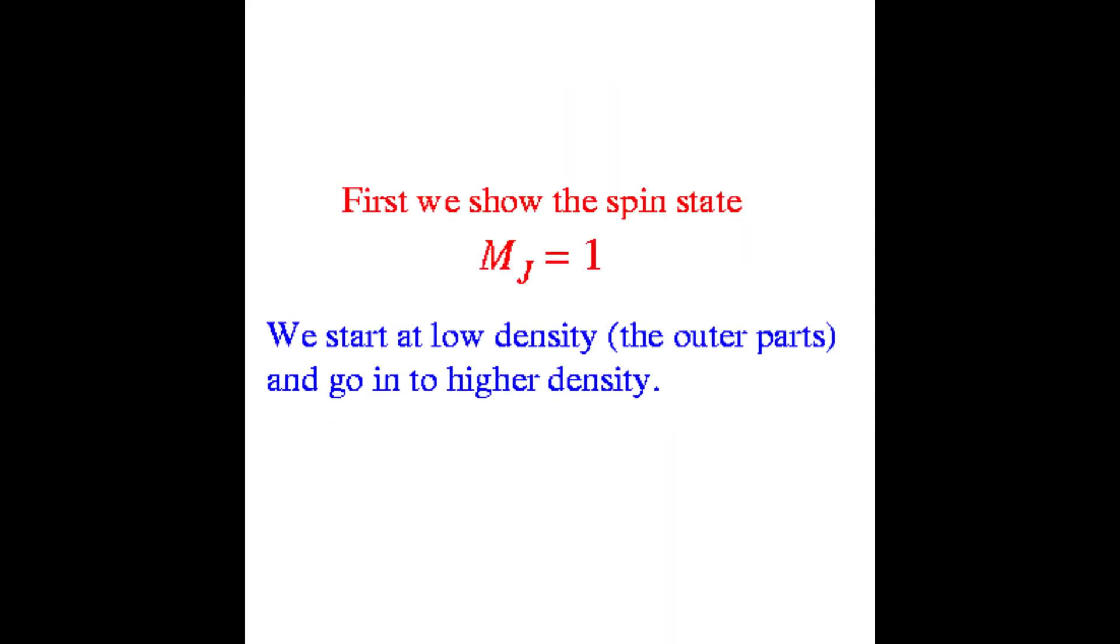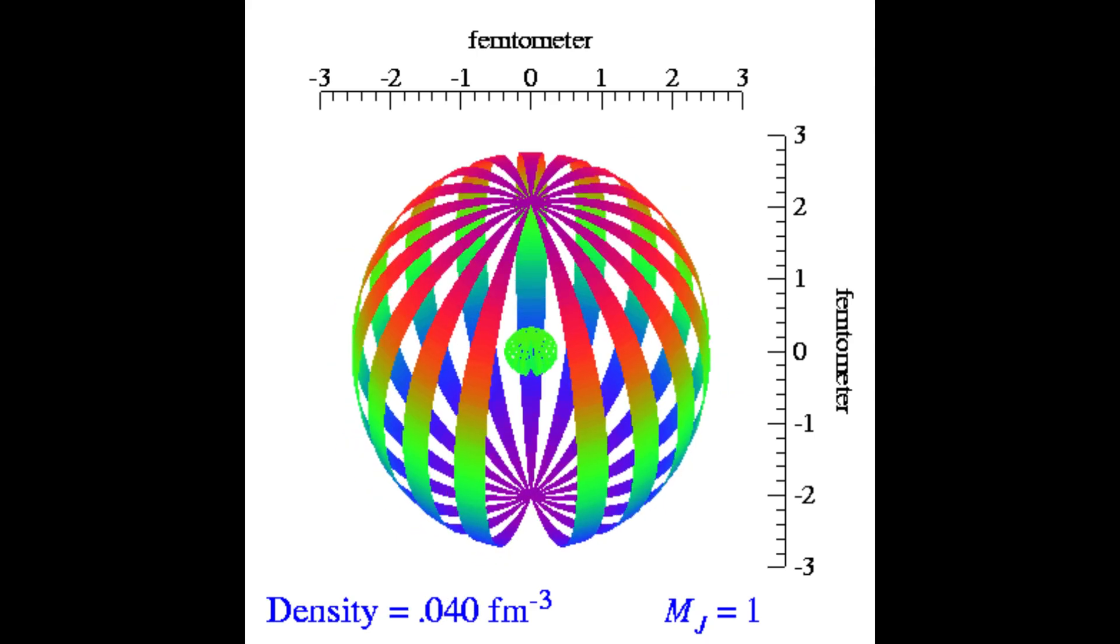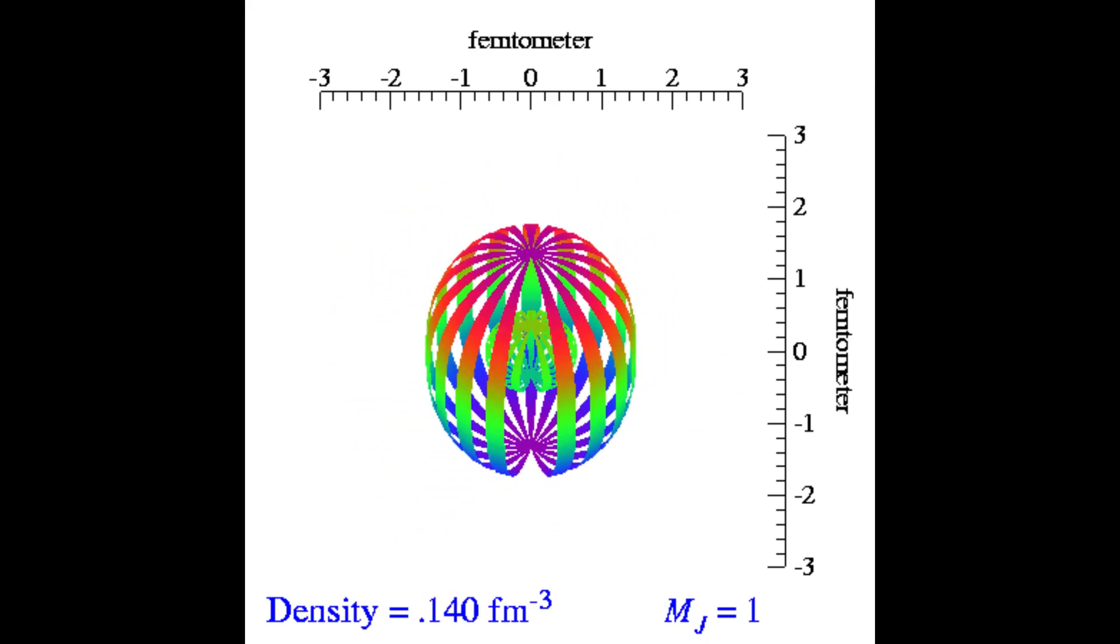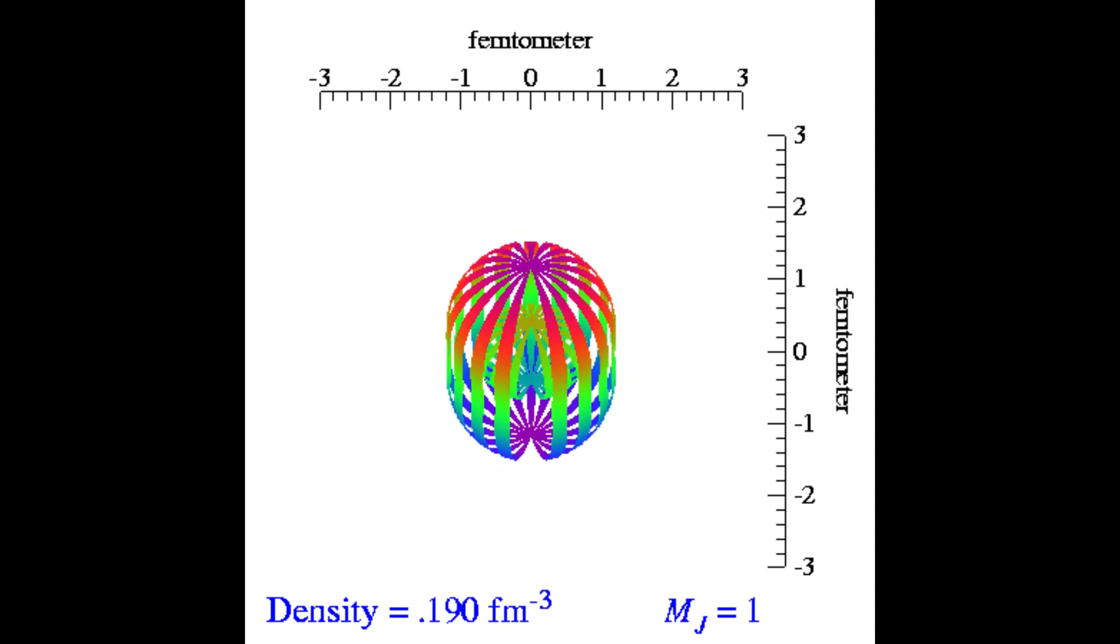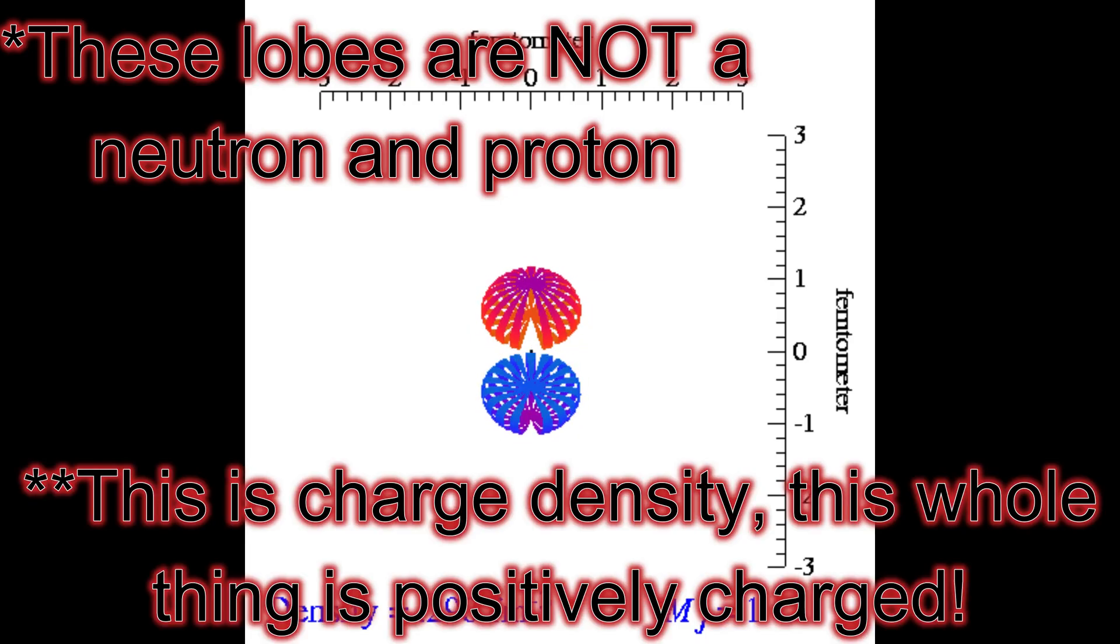And we're going to go from low to high density at first in the nucleus. You could start, it's like a shell with a center hole. And as you increase the density, you can see it kind of will pinch off and form two denser lobes way in the interior.